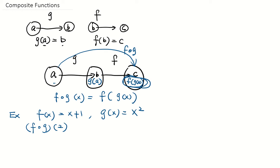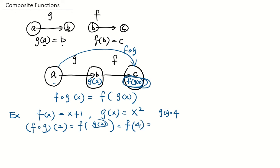So what is f of g of 2? By definition, that is f of g of 2. The input for g is 2, and the input for f is g of 2. To find f of g of 2, first you have to find g of 2. g of 2 is equal to 2 squared, which is 4. So f of g of 2 is f of 4. Plugging 4 into f, that's 4 plus 1, which equals 5.